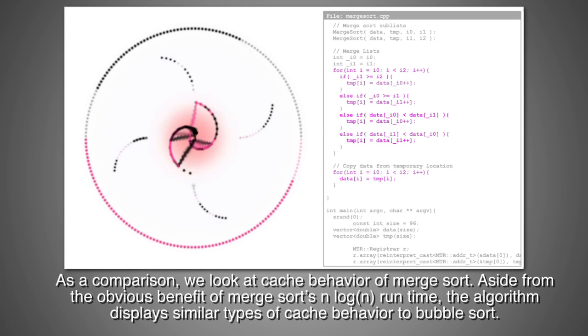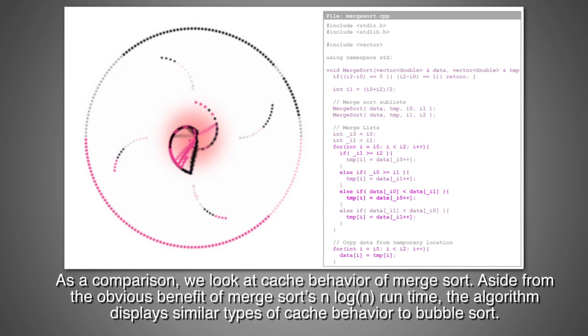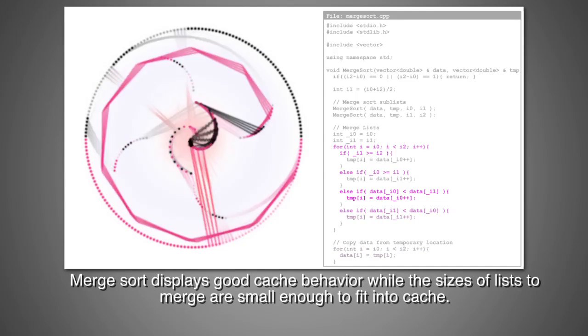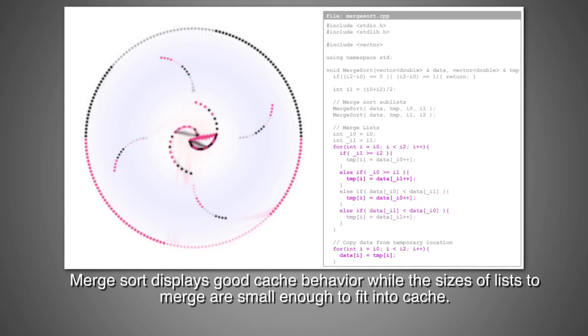As a comparison, we look at cache behavior of merge sort. Aside from the obvious benefit of merge sort's n-log-n runtime, the algorithm displays similar types of cache behavior to bubble sort. Merge sort displays good cache behavior while the sizes of lists to merge are small enough to fit into cache.